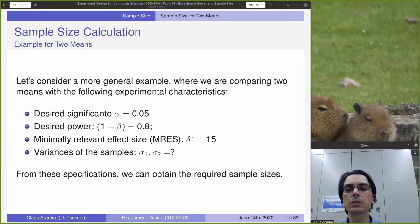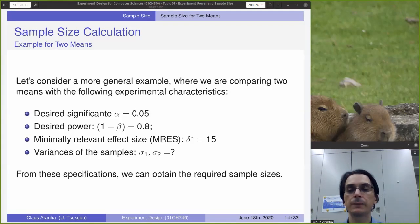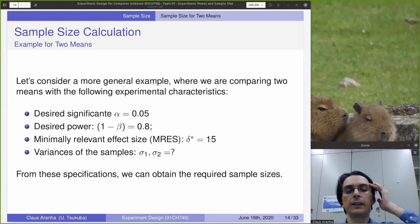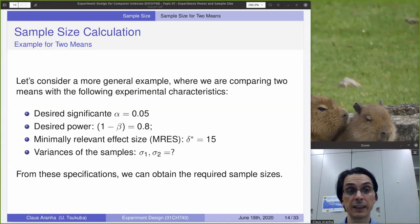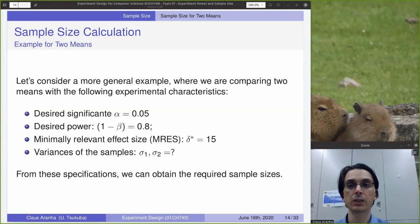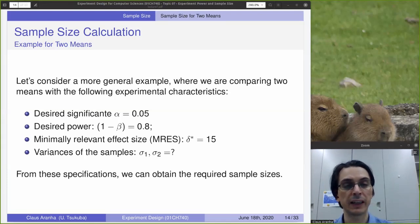Let's consider a general case, especially for computer science, where we have two means from two different samples and we want to compare them. As I said before, the sample size calculation is something that you do at the experiment design stage before you do the experiment. So you define the parameters for your experimental design in order to calculate the sample size.